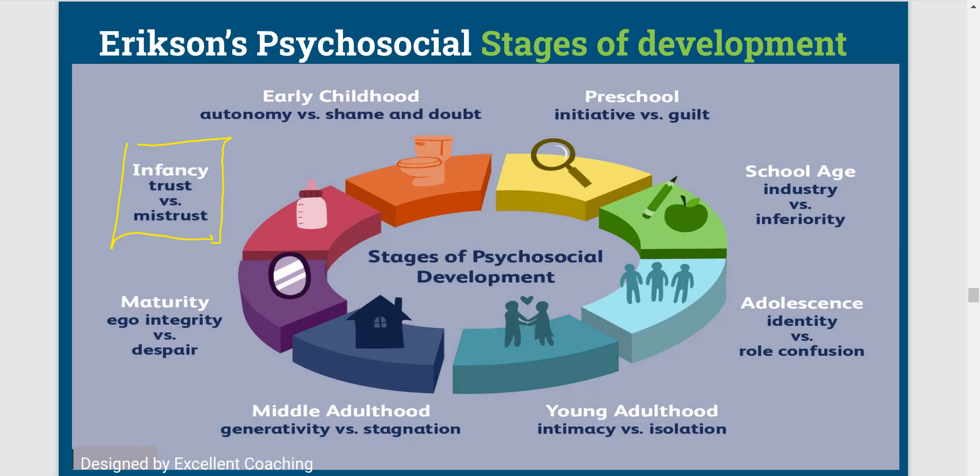If during the first two years parents have built an environment where the child is handled with warmth and affection, and the mother is sensitively taking care of the child, then the child develops trust. In the future, when he grows up, that trust is seen in how he interacts with other people. So it depends on the first two years of psychosocial development how the child develops in terms of social and emotional skills. This stage is very important where trust has to be built.